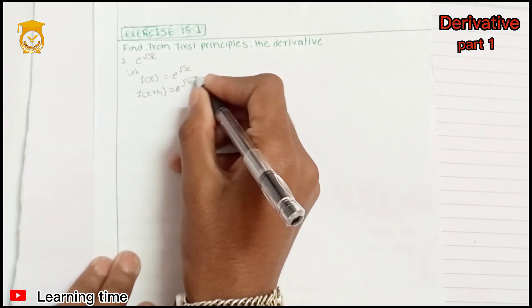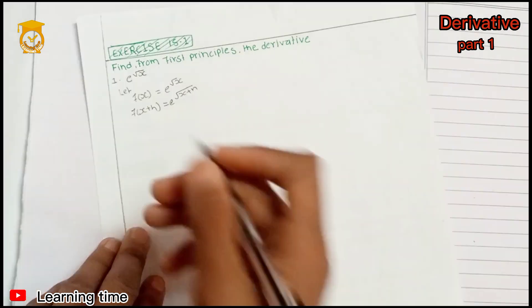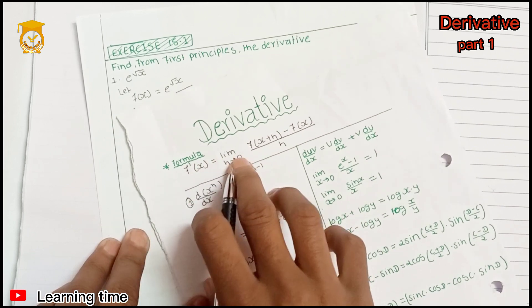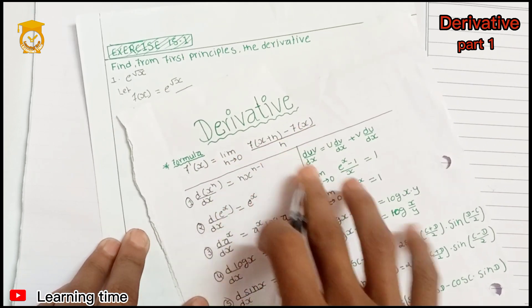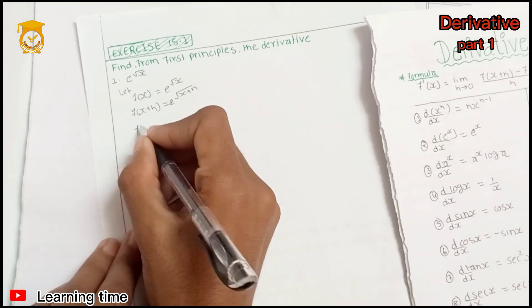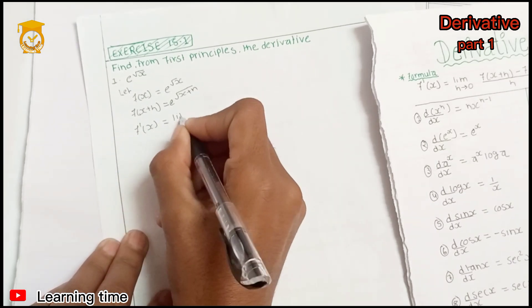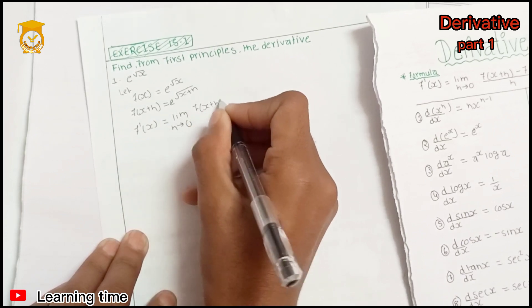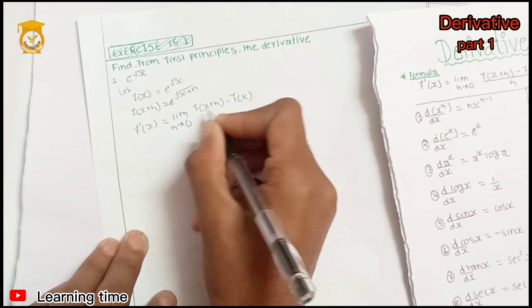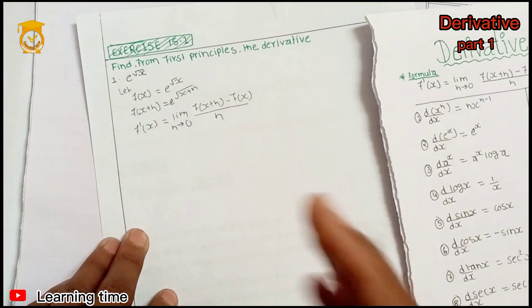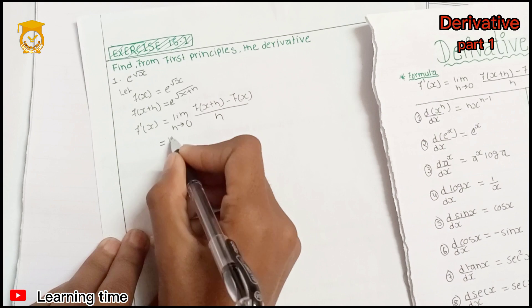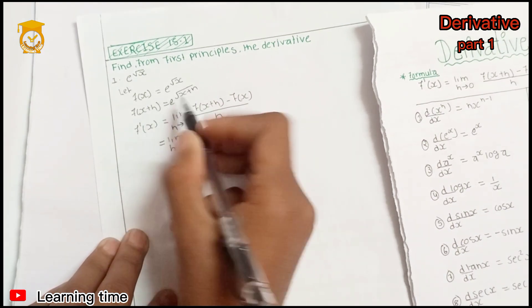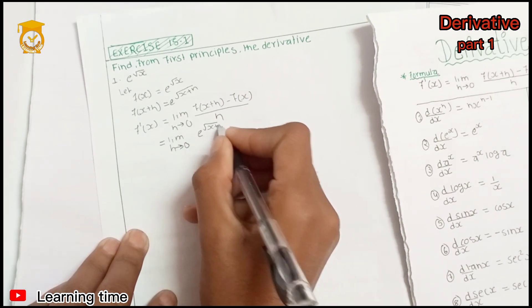The derivative of x equals limit as x changes to 0 of [f(x plus delta x) minus f(x)] divided by delta x. Exchange to 0.